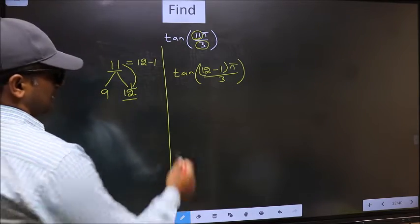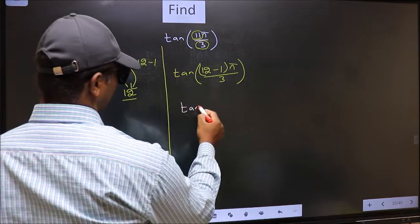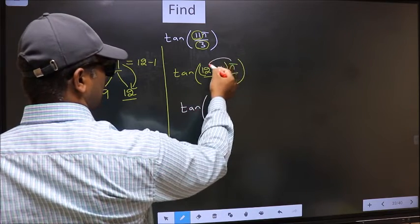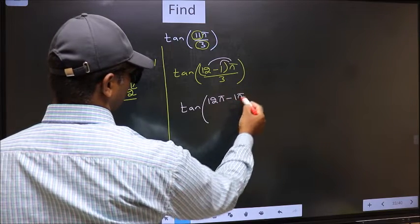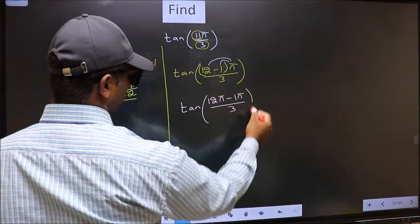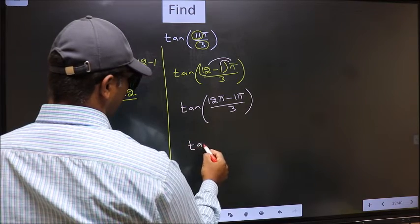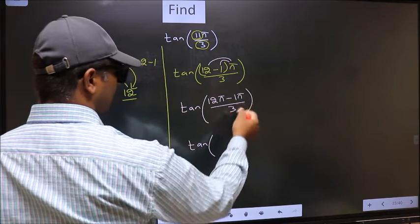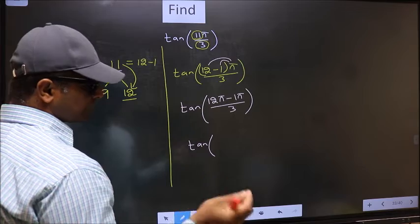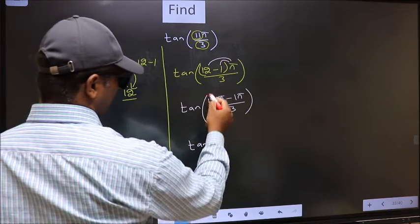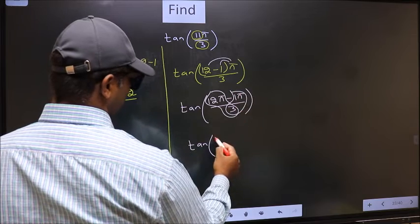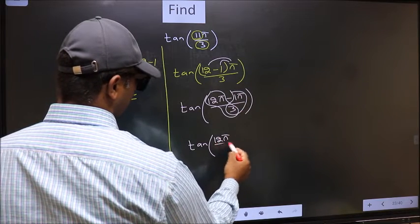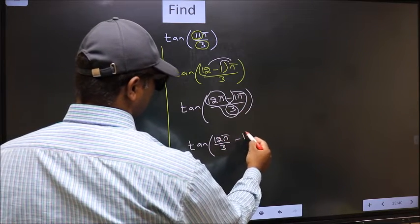Next, tan. Now you should open the brackets. You get 12π minus 1π by 3. Now, tan over here, you should split the denominator in this way: that is 12π by 3 minus 1π by 3.